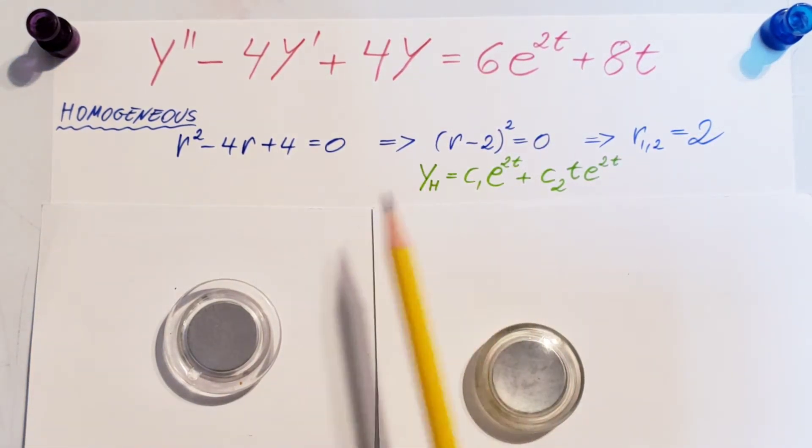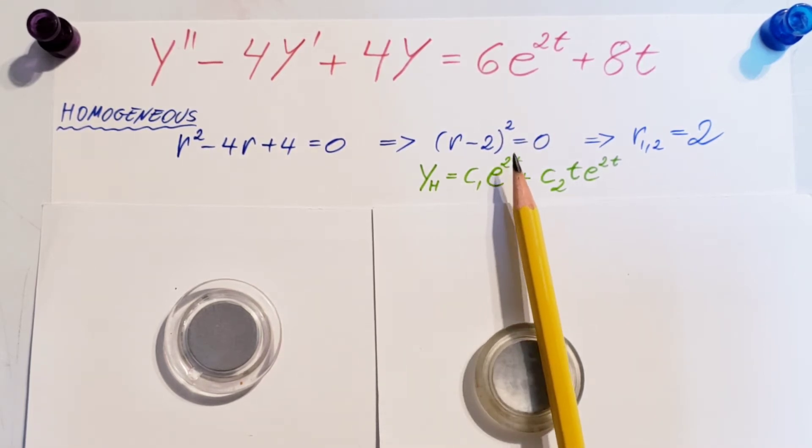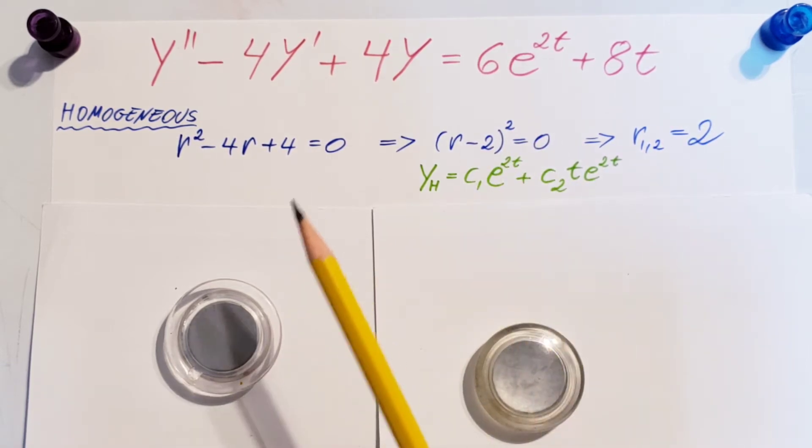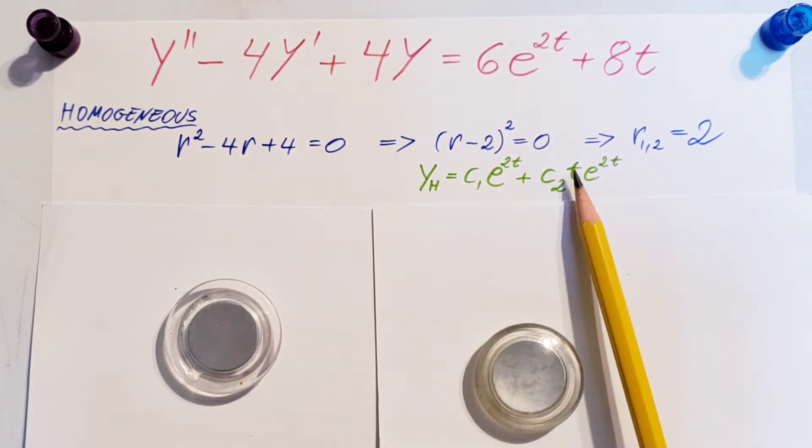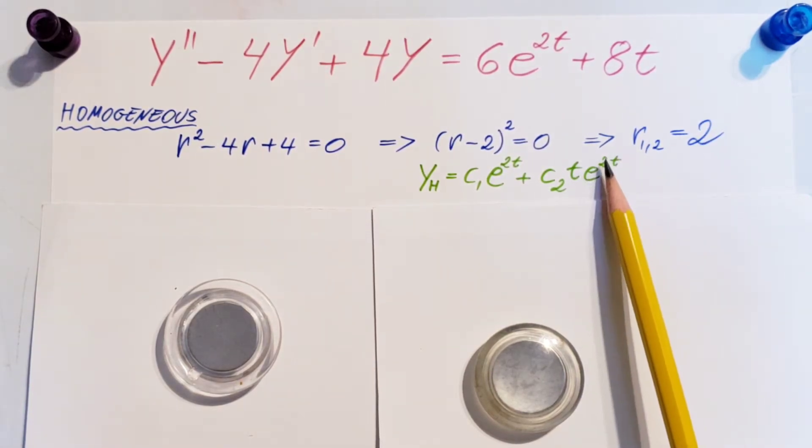Our homogeneous solution, we can write it up from this. yh equals c1e to the power of 2t, the 2 comes right here, then plus c2t, e to the 2t.